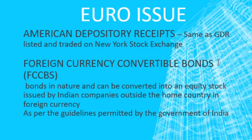The second instrument is ADR, or American Depository Receipt. This is the same as GDR, but it will be listed and traded on the New York Stock Exchange. In the case of GDR, it is listed and issued through the European exchange, whereas ADR follows the same procedure but is listed on the New York Stock Exchange.